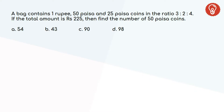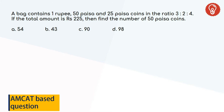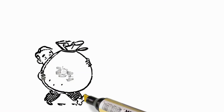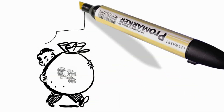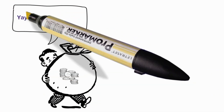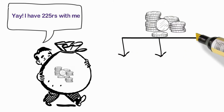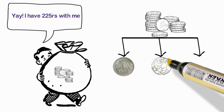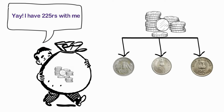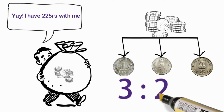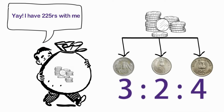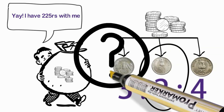I would suggest you to pause the video and read the question. Suppose you have a bag full of coins worth rupees 225. The coins in the bag are 1 rupee, 50 paise, and 25 paise, which are in the ratio 3:2:4. How many 50 paise coins are there in the bag?